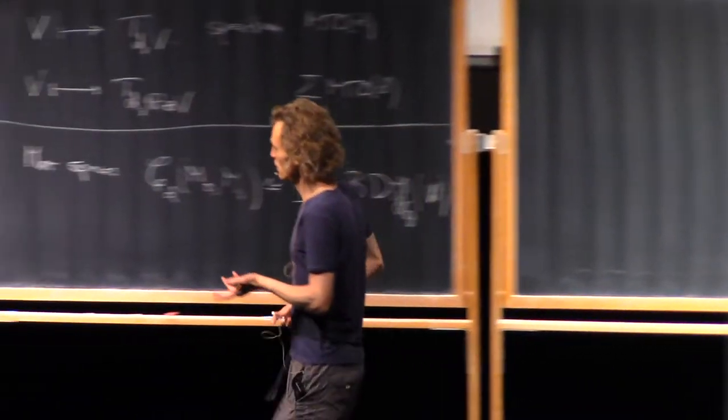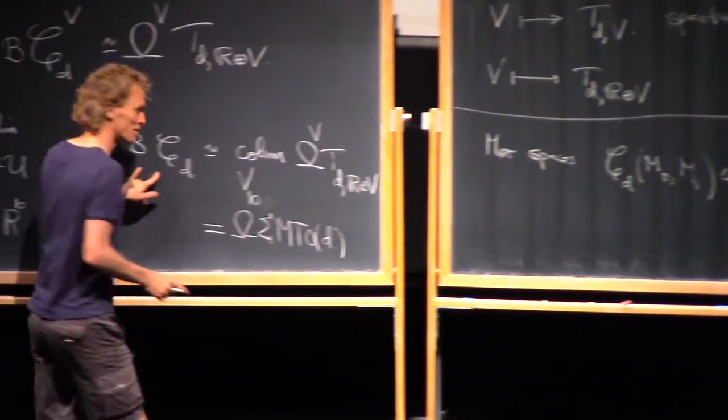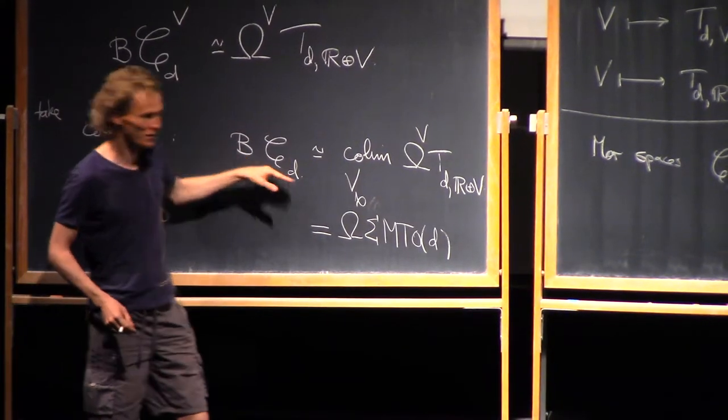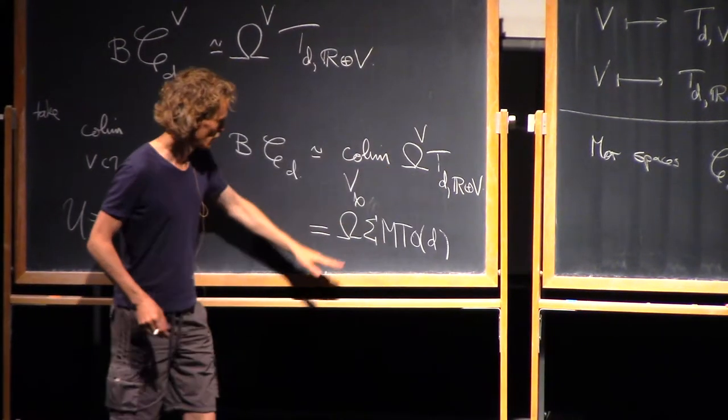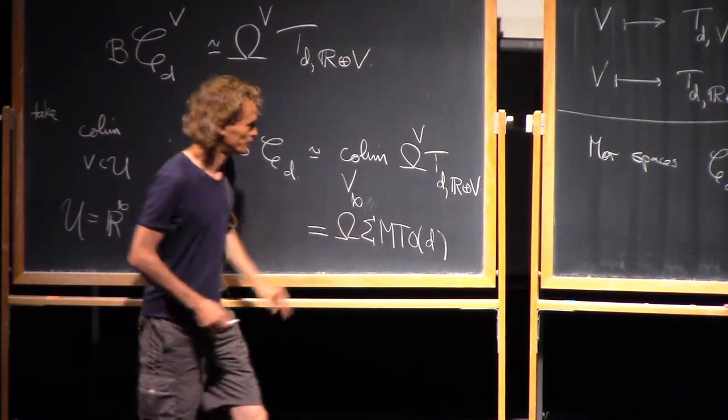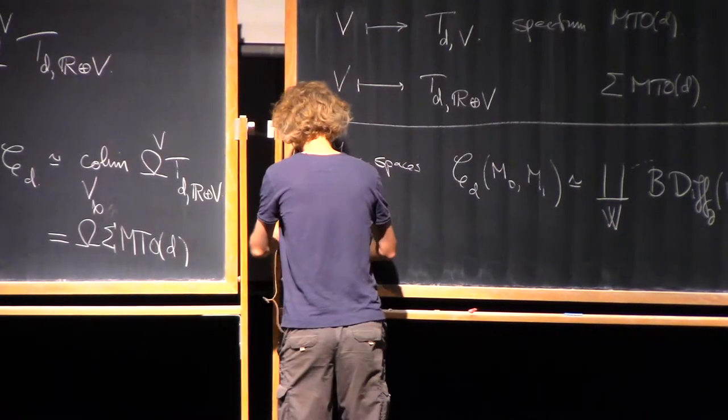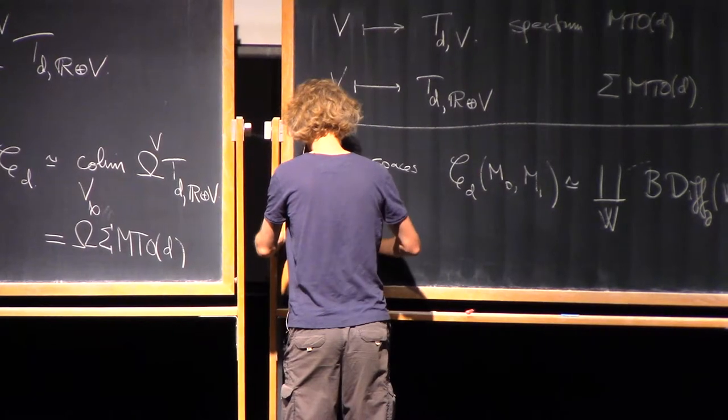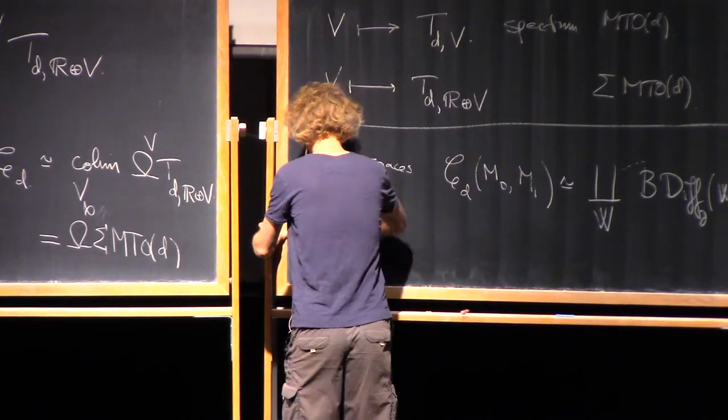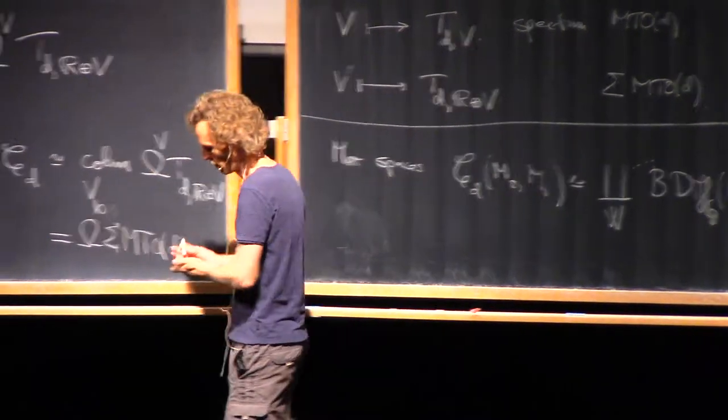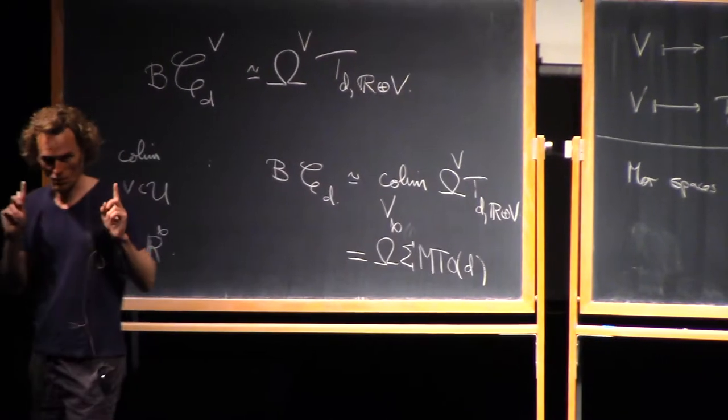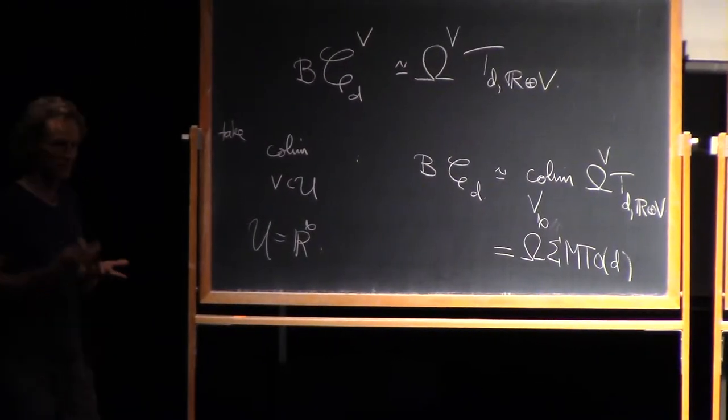So that's the object I'm interested in. And I want to read this weak equivalence as kind of calculating this side in terms of this side. So a priori, but the morphism spaces, individual morphism spaces,